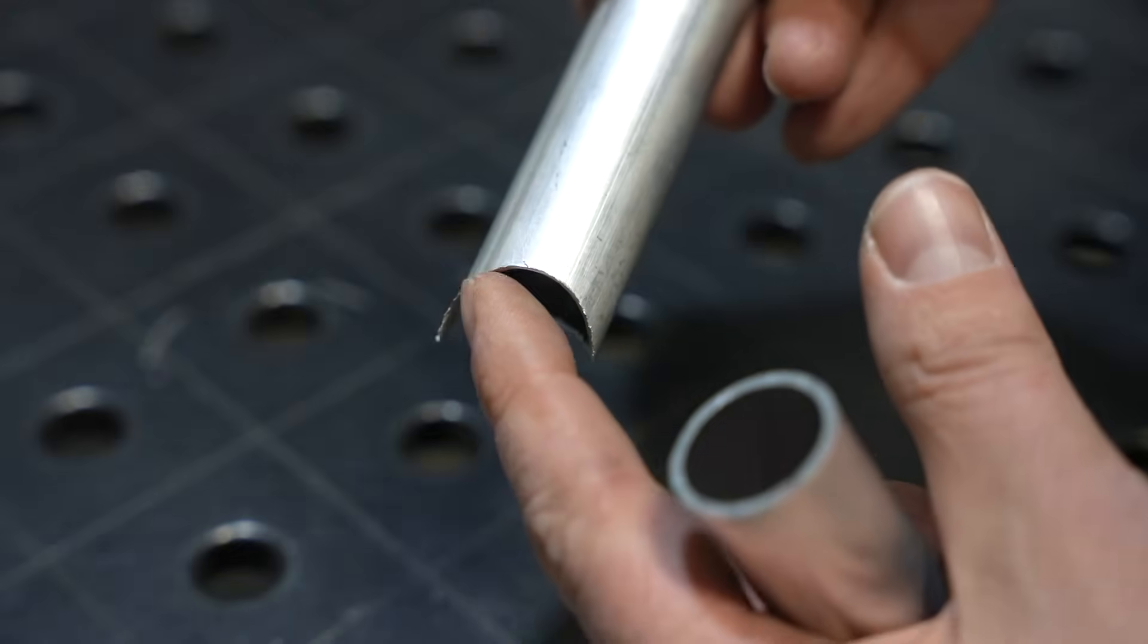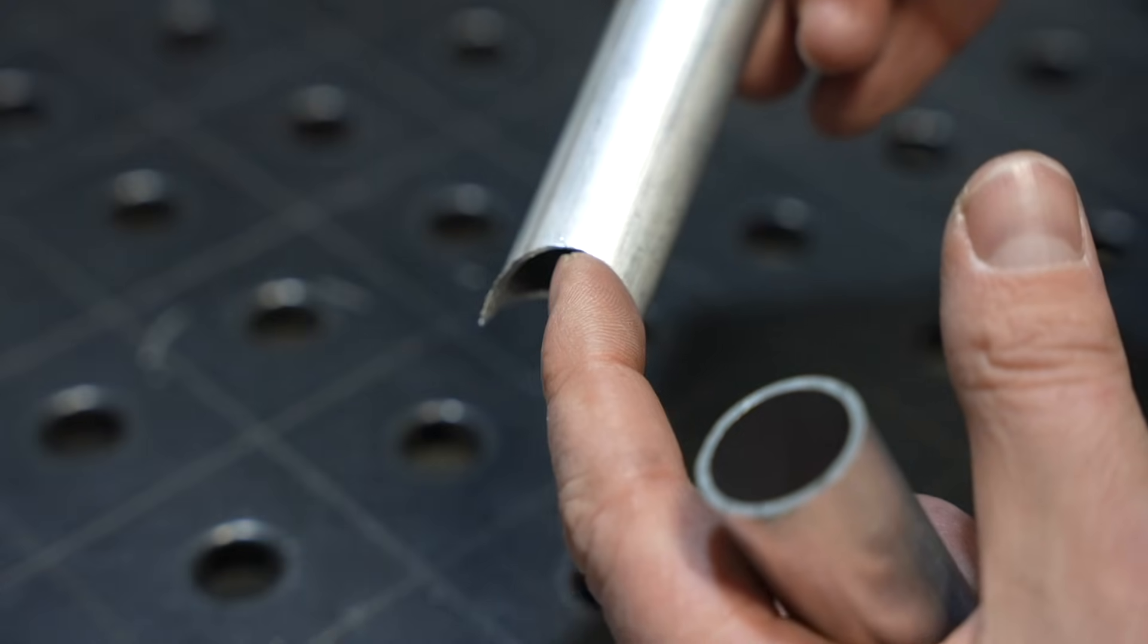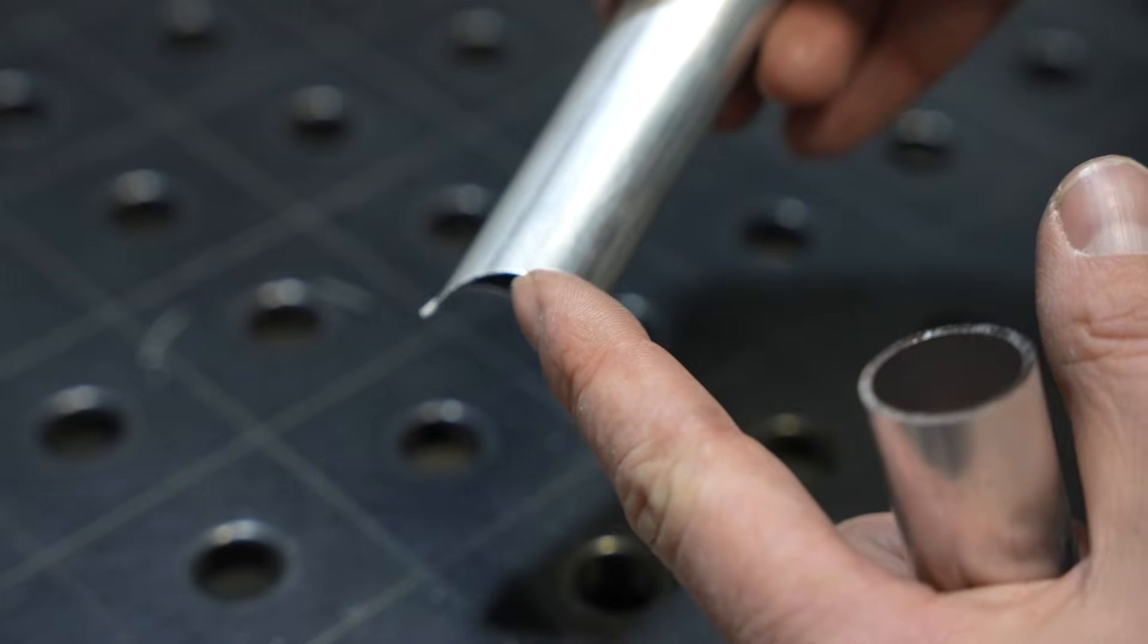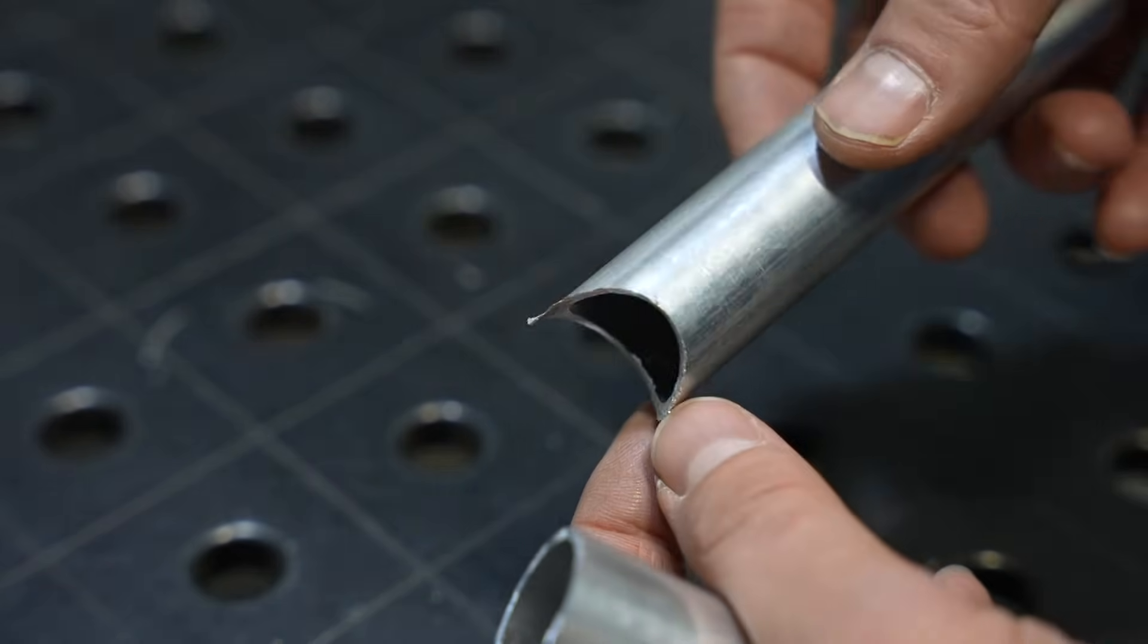So you'd need to take a die grinder and take out a little bit of material there to square it up. And usually if you're trying to hit a length, that means that you'll have to go just a little long and do that anyway. So at that point you might as well just notch it by hand with a die grinder anyway.